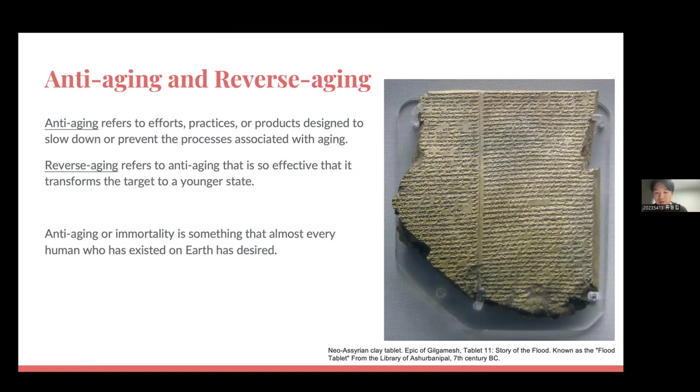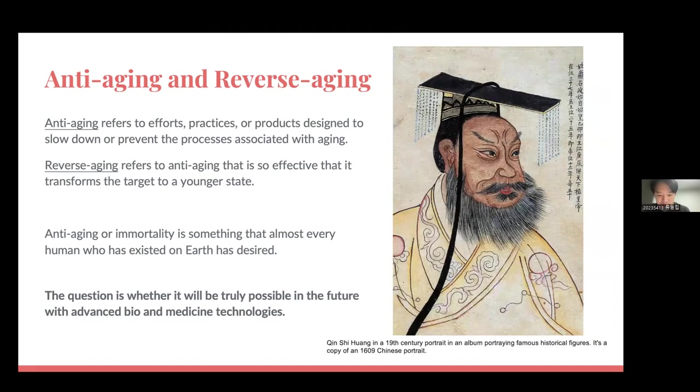As this definition states, aging is regarded as inevitable and equal to all life on earth. But recently, anti-aging and reverse aging technology are rapidly developing. Anti-aging refers to efforts designed to slow down or prevent the process associated with aging. Reverse aging is more strong, so effective that it transforms the target to a younger state.